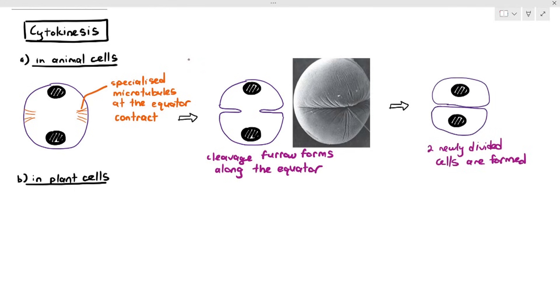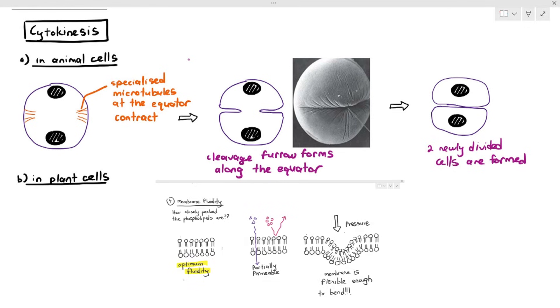Eventually the cleavage furrow from both sides will meet and they will form two newly divided cells. A very important thing I want you to notice and take note of this: the cleavage furrow is only possible if the membrane is fluid or flexible. If the cell surface membrane is not fluid or flexible, it is very difficult for the cleavage furrow to even form.